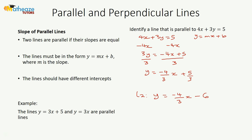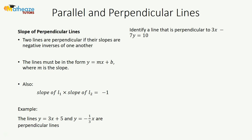For perpendicular lines, their slopes have to be negative inverses of one another. For example, if one line has slope 3, the perpendicular line has slope −1/3. That is, 3/1 becomes −1/3 — you flip the fraction and change the sign.